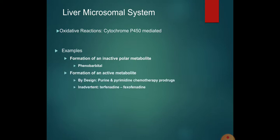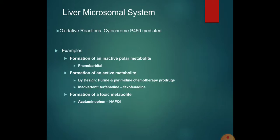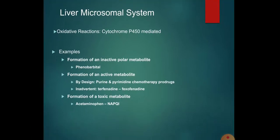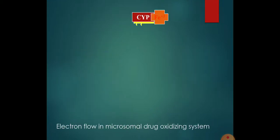Cytochrome P450-mediated reactions involve drugs undergoing Phase 1 activation or inactivation, and Phase 2 reactions like glucuronidation. This is all happening in the Cytochrome P450 system. Cytochrome P450 is basically a hemoprotein - a kind of chromoprotein. CYP stands for Cytochrome, P stands for pigment, and 450 is the nanometer of light it maximally absorbs in the presence of carbon monoxide.